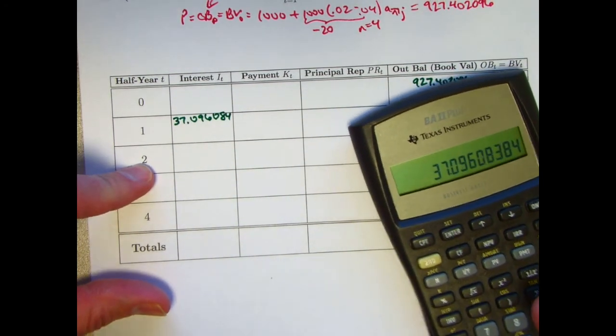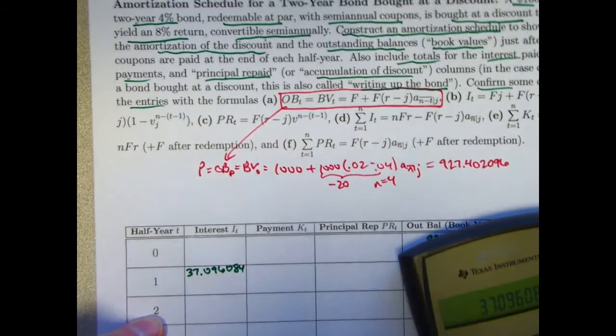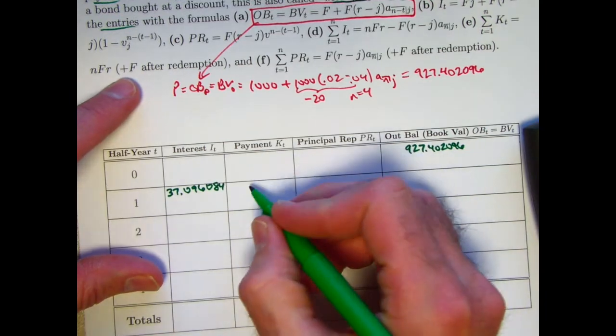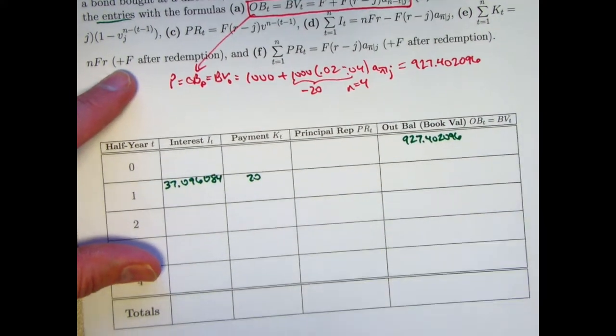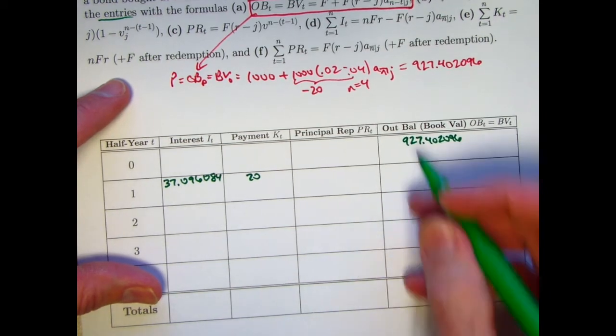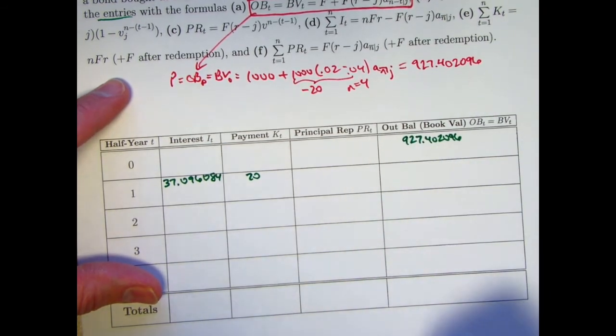The payment is the coupons, 1,000 times 2%, half of that, $20 payments. Not enough to cover the interest. So the balance is going to go up. It's going to go up ultimately toward 1,000 before I have the redemption amount of 1,000 and bring it back down to zero.